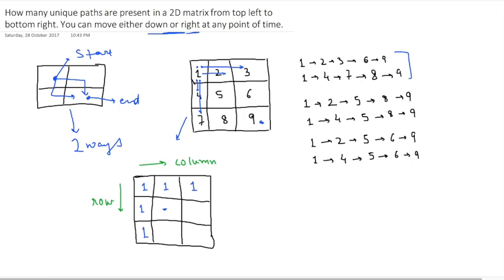So either I might be coming from this or from this position, so the total ways will be two. Similarly, for the third column and second row, total ways can be from the top and from the left.